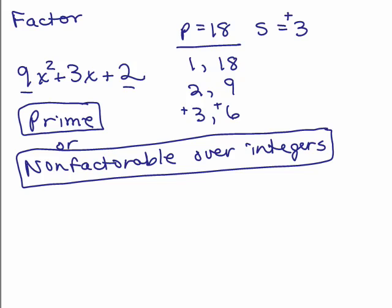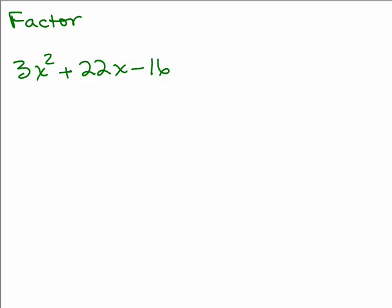Let's go on to another one. Here's another one to factor. Again, what are we going to do to get the product and sum is 3 times negative 16, so the product is negative 48, and the sum is the middle term of 22. So first we want to just list pairs of factors that multiply out to be 48.